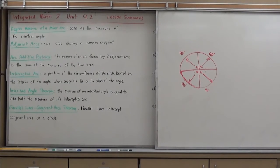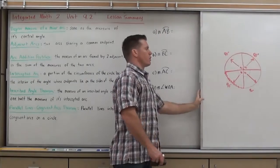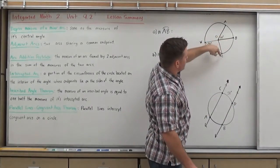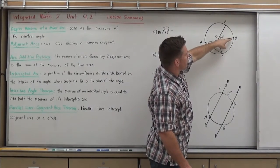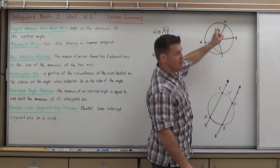Adjacent arcs are any two arcs sharing a common endpoint. So for example, in my diagram here, AB is an arc, BC is an arc, they both share B. So AB and BC are examples of adjacent arcs.